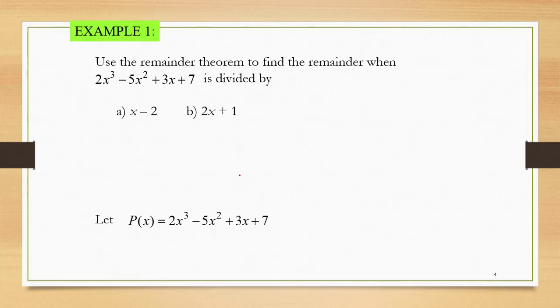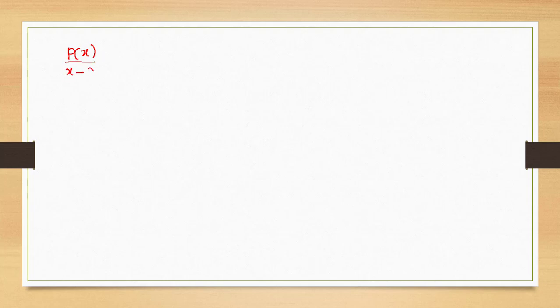Let's go to the example. Use the remainder theorem to find the remainder when 2x³ minus 5x² plus 3x plus 7 is divided by: (a) x minus 2, and (b) 2x plus 1. Let P(x) equal 2x³ minus 5x² plus 3x plus 7. The remainder theorem tells us that if we divide P(x) by x minus a, the remainder is just equal to P(a).